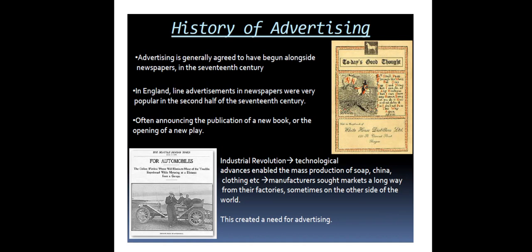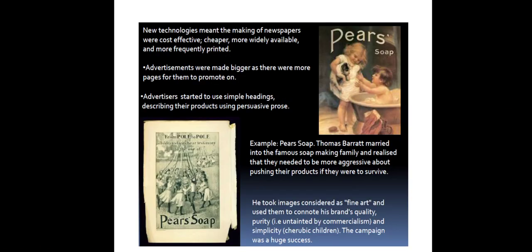When the Industrial Revolution brought technological advancements, there was mass production of goods happening. Factories enabled mass production, and goods needed to be sold at scale. This created a huge growth in the need for advertisement. The making of newspapers also became more cost-effective, cheaper, more available, and more frequently printed — making print the most popular advertising media.